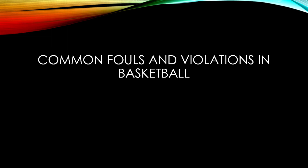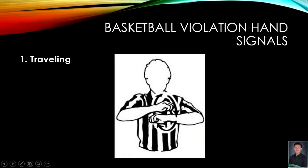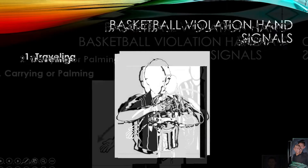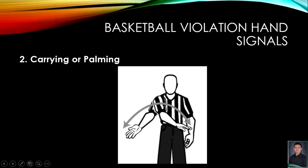In playing any sport, it is essential to know the hand signals or gestures delivered by the officiating officials. It is their way of communicating to the players when rules are followed or violated. Here are the basketball violation hand signals. Number one, traveling: when a player has committed a traveling violation, the official will signal it by placing both of his hands in front of him and moving them in a circle.